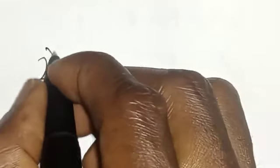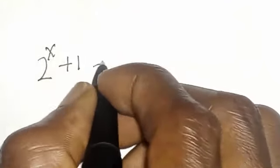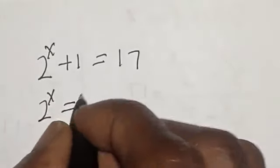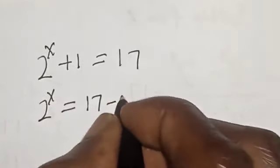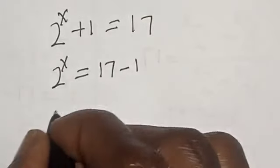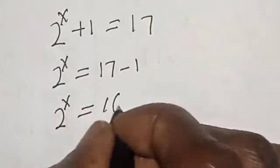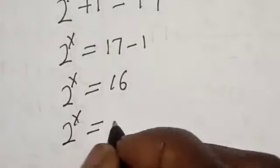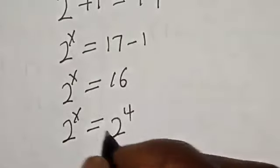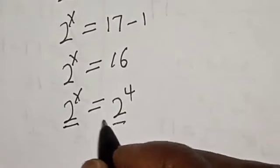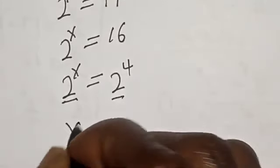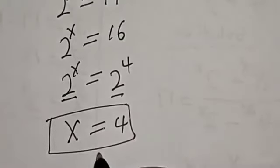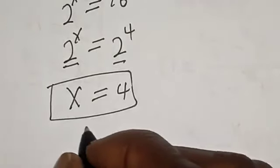The (2^s minus 1) terms cancel, leaving 2^s plus 1 equals 17. So 2^s equals 17 minus 1, which is 16. Since 16 equals 2 raised to power 4, and the bases are the same, s equals 4. That is the value of s. Let's check to confirm if our answer is right.